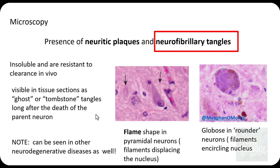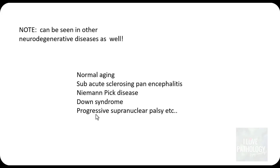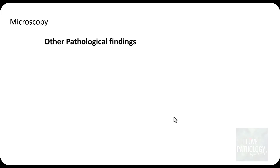It is important to note that neurofibrillary tangles can also be seen in other neurodegenerative diseases and as a process of normal aging. They can be seen in subacute sclerosing panencephalitis, Niemann-Pick disease, Down syndrome, and progressive supranuclear palsy. That is why neurofibrillary tangles are not specific for Alzheimer's disease — you have to see both neuritic plaques and neurofibrillary tangles to diagnose Alzheimer's disease.